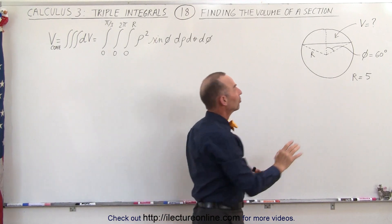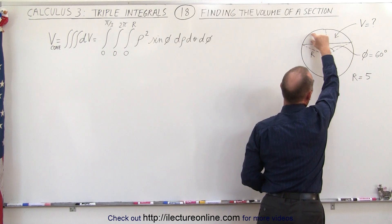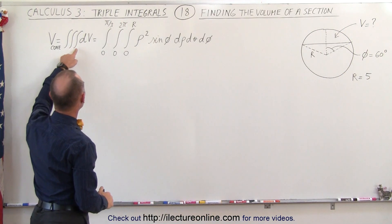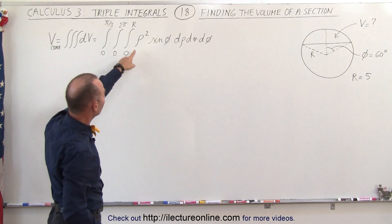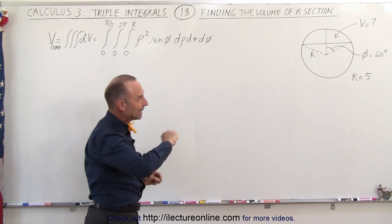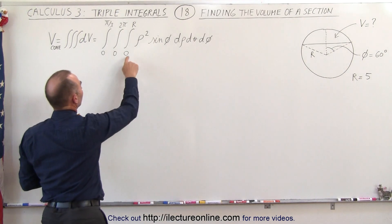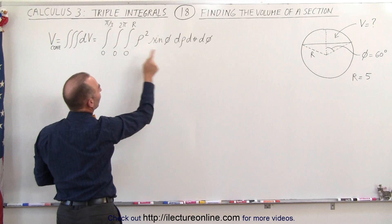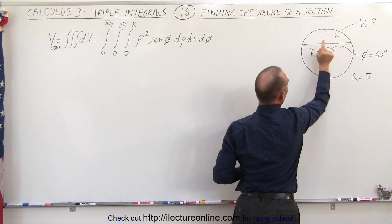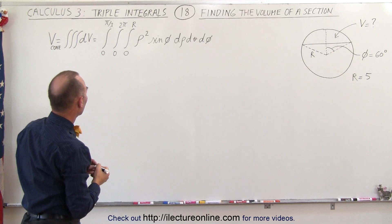The strategy is to find the volume of the entire cone, and then we're going to subtract the volume of this portion right here, leaving us with the volume of the top only. The volume of the cone is equal to the triple integral of dV, where dV is the volume element rho squared sine of phi d-rho d-theta d-phi, rho being the variable in the radial direction. The limits are from 0 to the edge of the sphere, from 0 to 2 pi in the angle theta, and from 0 to pi over 3 — a 60-degree angle — to get that cone shape first.